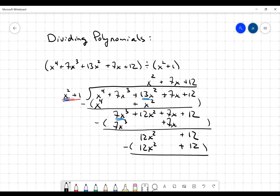And when I subtract, I'm going to get 0x squared. But I'm also going to get 0 here. So my remainder is equal to 0. So it turns out that x squared plus 1 was actually a factor of that dividend here, the x to the 4th plus 7x cubed plus 13x squared plus 7x plus 12.